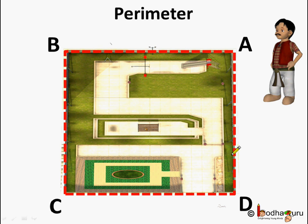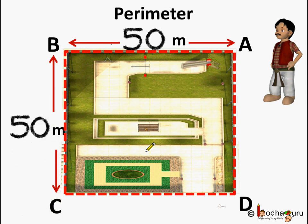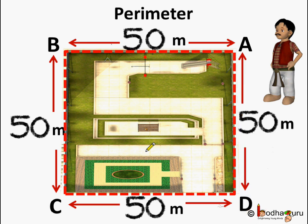Like here the red dotted lines indicate the perimeter of this figure. Now what is the perimeter here? If we know the length of the sides then we can calculate the perimeter. So the perimeter here is equal to 50 meters plus 50 meters plus 50 meters plus 50 meters which is equal to 200 meters.